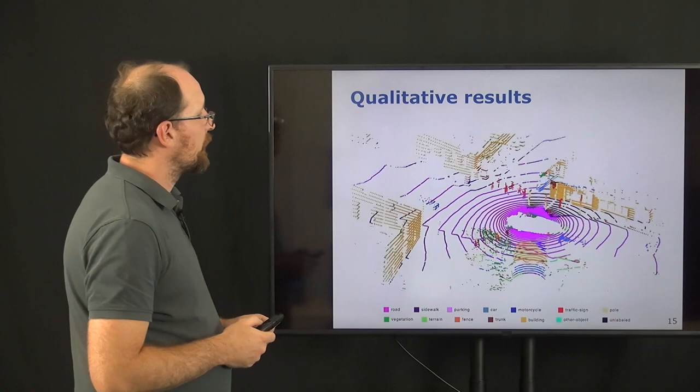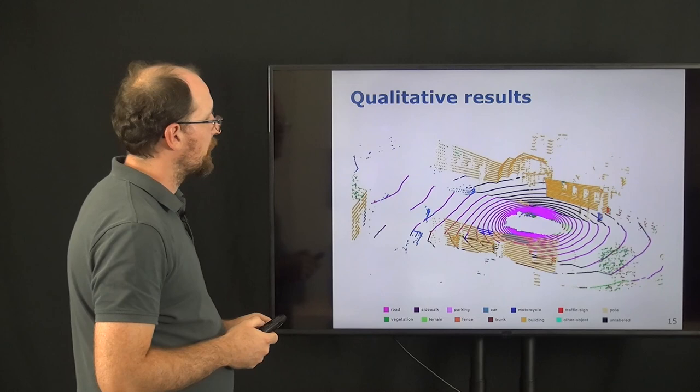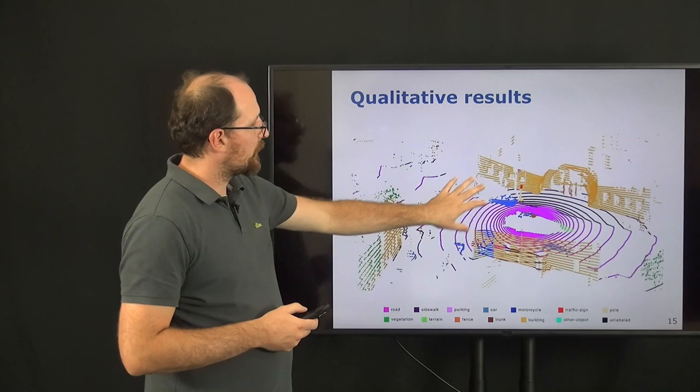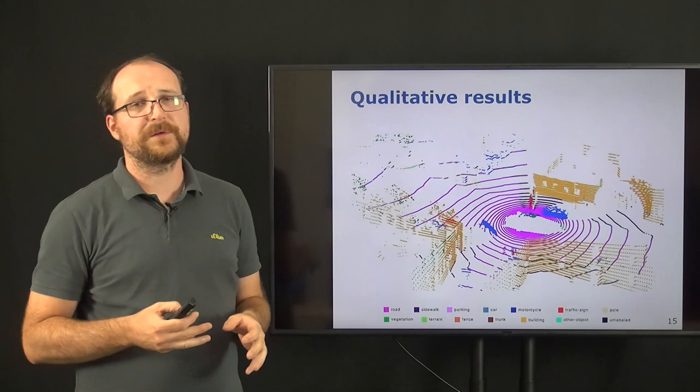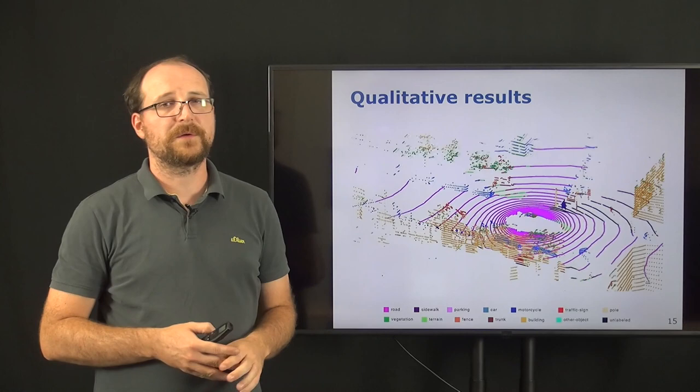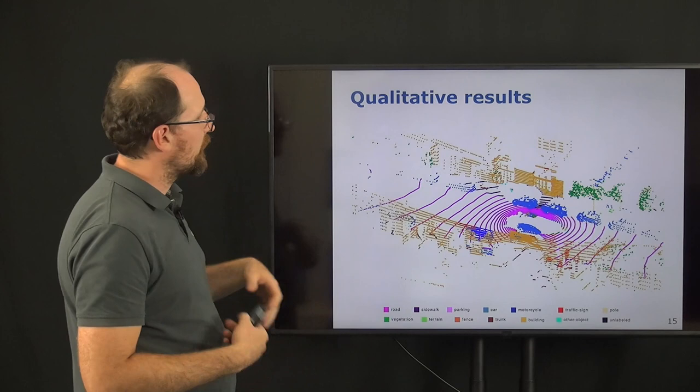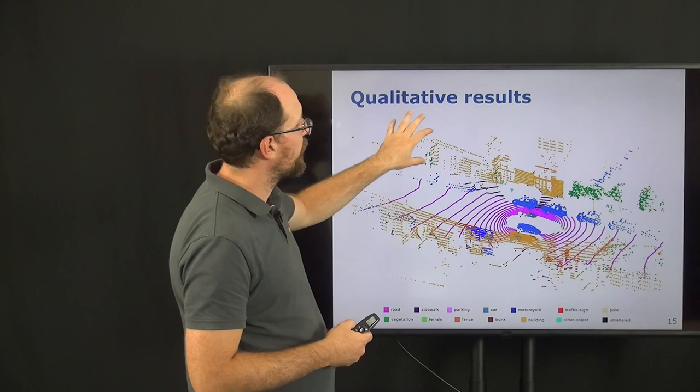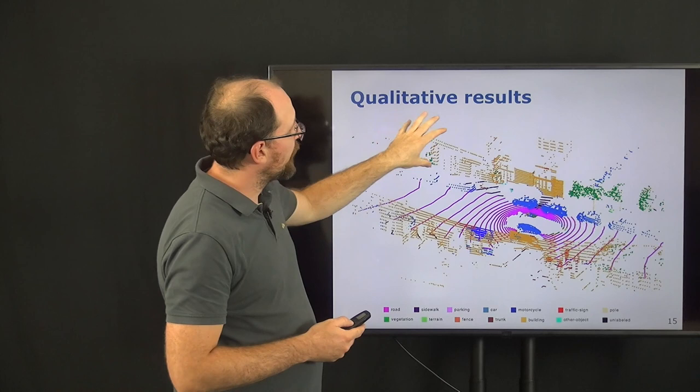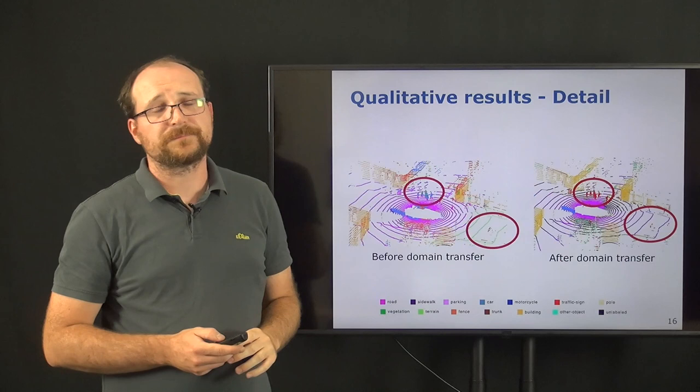Our qualitative results show also this greatly improved results. As you can see here, most of the points get now correctly classified. But we can see in the upper part of the scans some flickering of the labels, which can mainly be explained by the different fields of view of the sensor. As you might remember, the KITTI dataset uses a 64-beam Velodyne, which has a narrower field of view than the 32-beam LiDAR sensor from the NuScenes data. And this leads to the synthetic scans that were generated never having labels for the upper part of the scan. But still we can see that often the points in the upper part still get correctly classified.